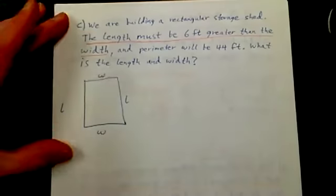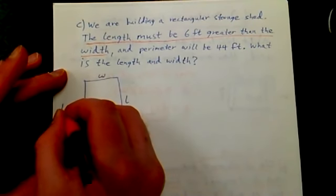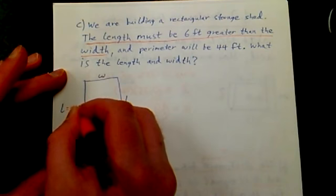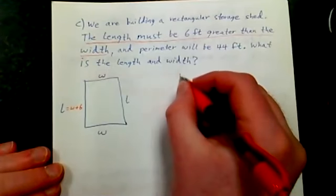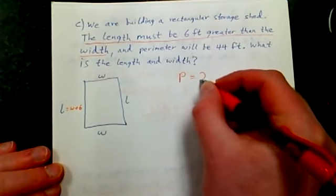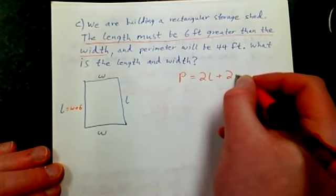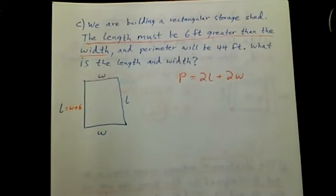It said that the length must be six feet greater than the width. That's going to be key, because instead of writing L, I could write W plus 6, right? The length is six feet greater than the width. So what is the length and width? Well, do I know some equation that kind of represents the length and the width and involves perimeter? Well yeah, that's perimeter equals 2 times the length plus 2 times the width. Yeah, we saw this one in the last section.